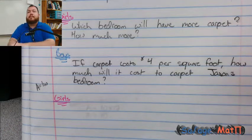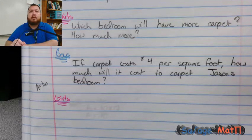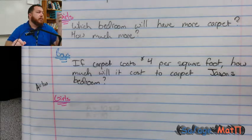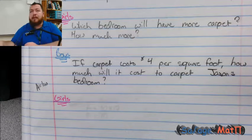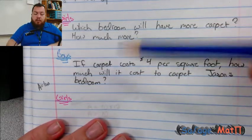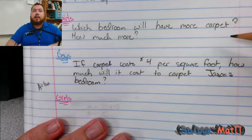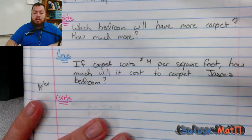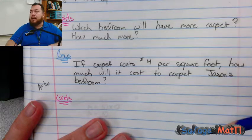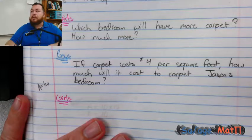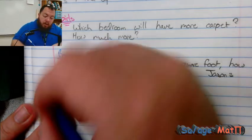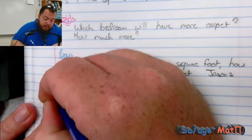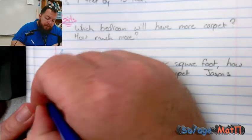So what is that asking us? Are there any hidden questions inside of the girls' question? In order to solve it, we have to find out how much carpet Jason's bedroom needs and how much his sister's bedroom needs. The way we do this is we have to find the area. Remember, area is length times width.